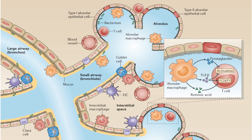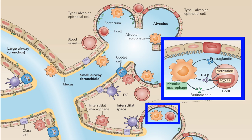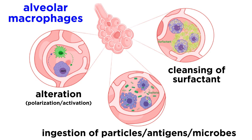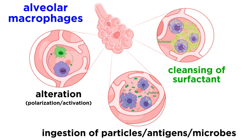However, some immune cells live in the respiratory tract even during quiescence, or dormancy. Alveolar macrophages, found in the alveolar space of the lungs, are one of the resident immune cell types in the airways and the main phagocytic type in the lungs. During periods of homeostasis, alveolar macrophages are important scavengers, using their phagocytic capacity to ingest inhaled particles, antigens, and microbes. They also keep pulmonary surfactant clean by phagocytosing proteins within the fluid.